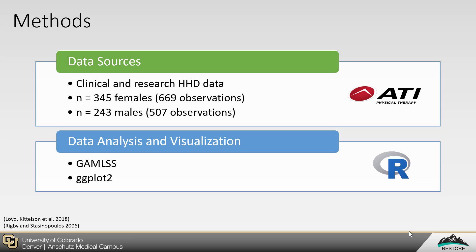We included both clinical and research handheld dynamometry data for our analysis. Clinical data was collected at ATI Physical Therapy, and research data came from a recent observational study. We conducted our analysis using the R statistical computing environment. Quadricep strength recovery was modeled using generalized additive models for location, scale, and shape, or GAMLs. GAMLs can be used to produce highly flexible models of empirical observations. After creating our GAMLs model, we used ggplot2 to create reference chart visualizations.